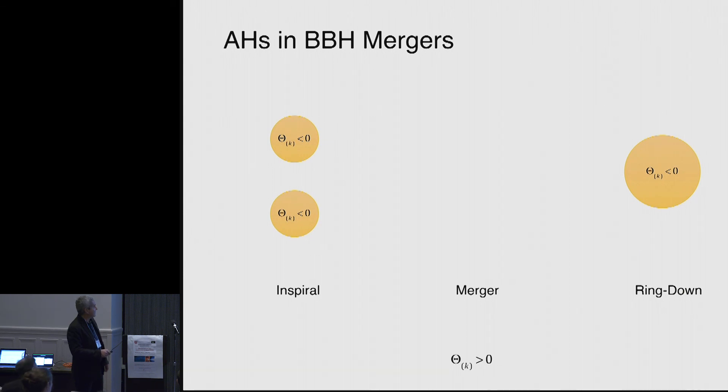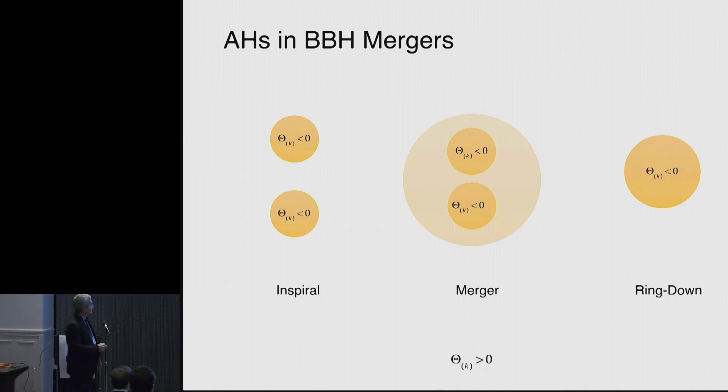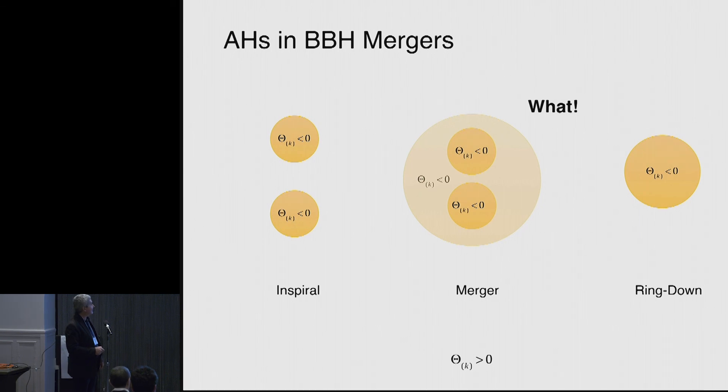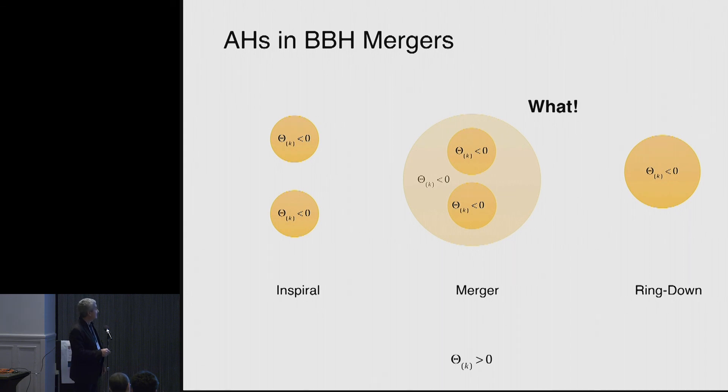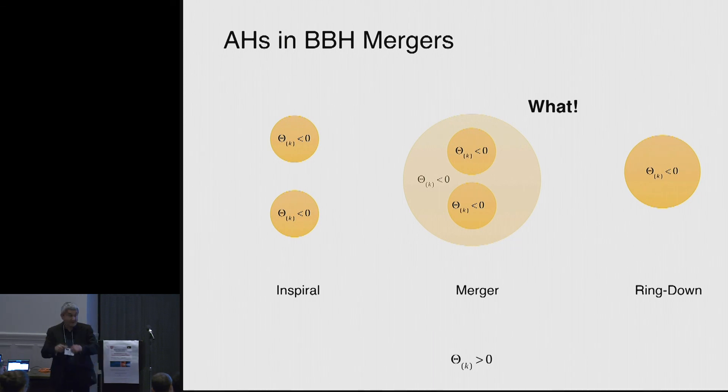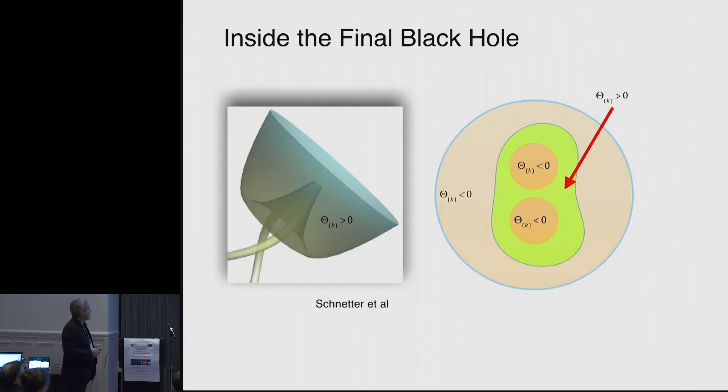And again, inside you have negative expansion. But then at the merger, you have a common horizon that appears instantaneously. But the situation is that if this is an apparent horizon, that means that this region is negative. So how can you have negative here, and a negative there is still this big, and an outermost apparent horizon inside of that. So what happened is that there is a bifurcation.